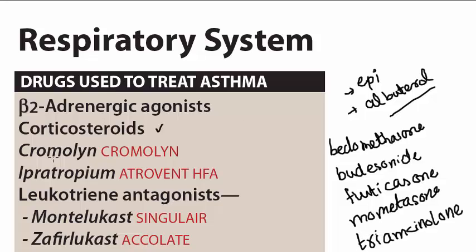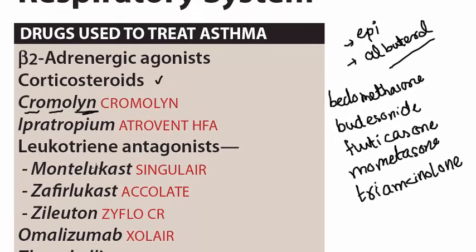We may also use a mast cell stabilizer — cromolyn and nedocromil. Ipratropium may also be used, which is a cholinergic antagonist. Then we have leukotriene antagonists: montelukast, zafirlukast, and zileuton.